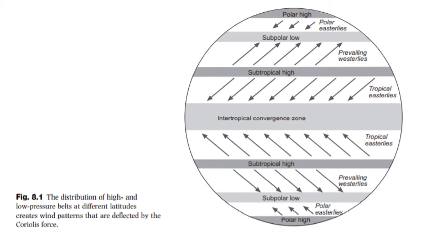As you know by now, Aeolian environments are dictated by wind. The global wind patterns are ultimately driven by temperature differences between the equator and the poles. Large air masses circle the globe, rising at the equator where the air is heated and moving towards the poles, where the chilled air will sink and repeat.